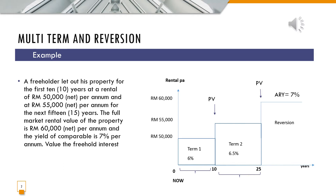A freeholder lets out his property for 10 years, where the rent will be RM50,000 net per annum, then another 15 years at a different rate — the rental will become RM55,000 net per annum. Remember, the rental must be in the form of net rent and also per annum. If the rent is on a monthly basis, don't forget to multiply it by 12. If the rent is not in net form — for example, the landlord is responsible to pay the outgoings — then don't forget to minus the outgoings. You must make sure the rent is net and per annum.